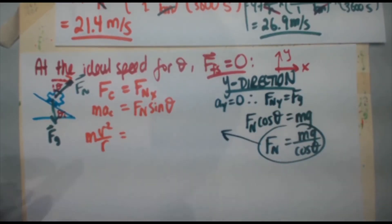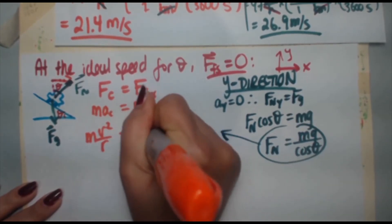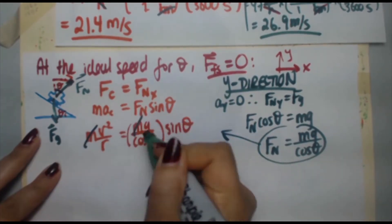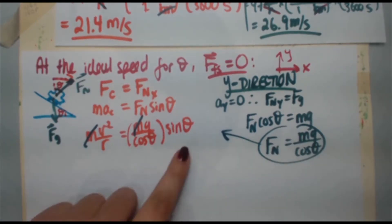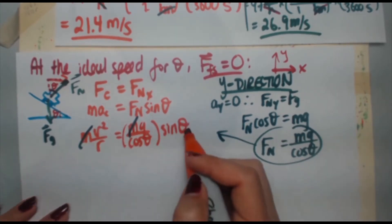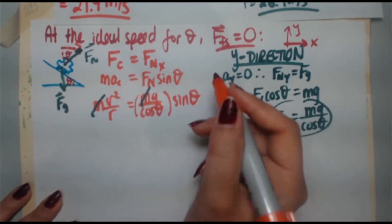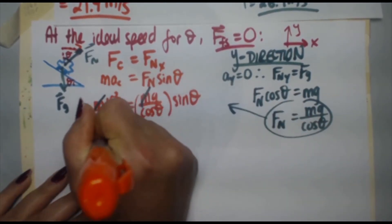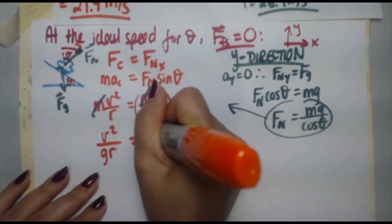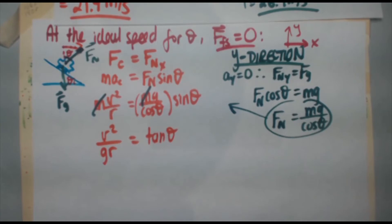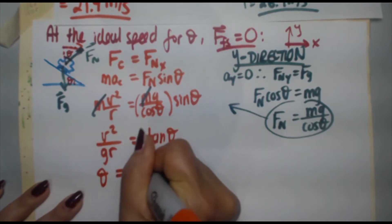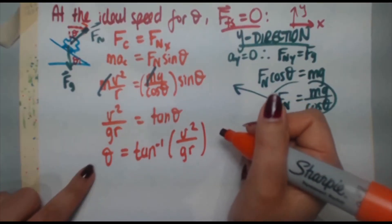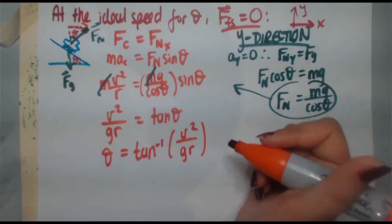Substituting FN = mg/cosθ back into the centripetal equation: (mg/cosθ) × sinθ = mv²/r. The masses cancel, leaving (sinθ/cosθ) × g = v²/r. Recognizing sinθ/cosθ as tanθ and rearranging: tanθ = v²/(gr), so θ = arctan(v²/gr).